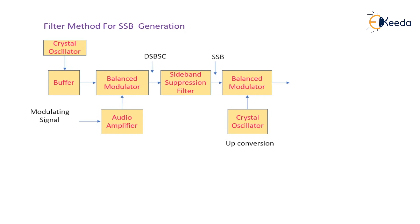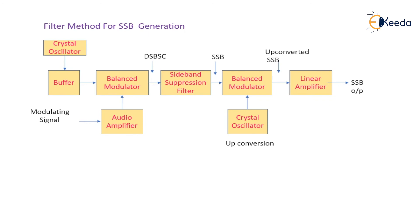Because the SSB signal has a lower frequency range, it needs to be sufficiently boosted using up-conversion technology. The balanced modulator is again modulated with a higher carrier frequency using another crystal oscillator. This produces an up-converted SSB signal, which is then coupled to a linear amplifier stage. The output of the linear amplifier gives the final SSB output.